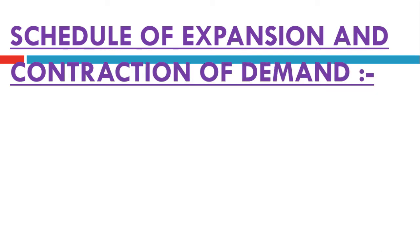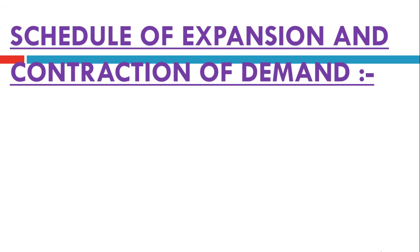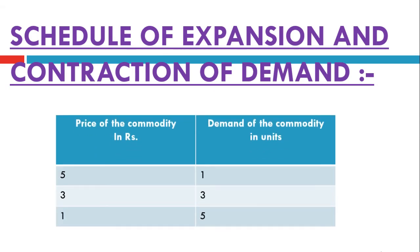The next topic is the schedule of expansion and contraction. I have taken a hypothetical schedule — you can take any schedule. As the price is 5, 3, 1, the demand is 1, 3, 5. You can take any numbers; 50, 30, 10 or 100, 200, 300 — it doesn't make any difference. Whatever numbers you take, you have to write them in the diagram, so do not go for cramming.